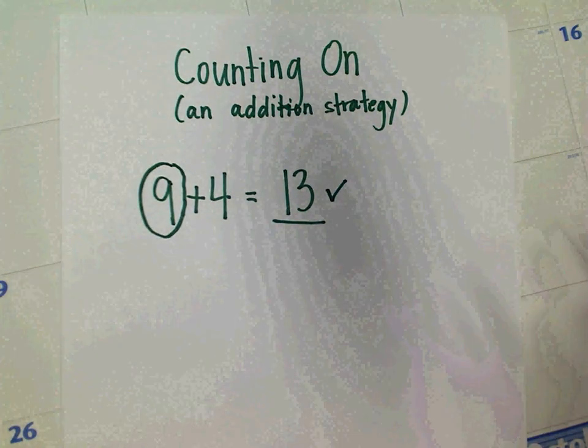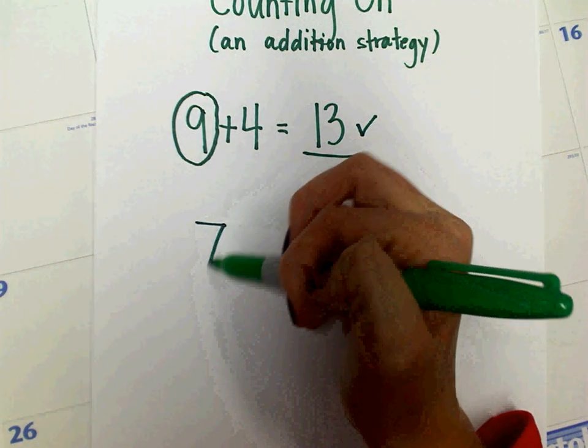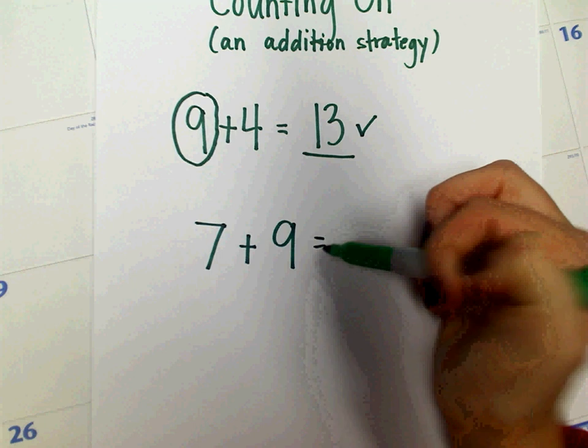Now let's try another one and I'm going to show you with dots this time. Now we're going to do the problem 7 plus 9 equals blank.